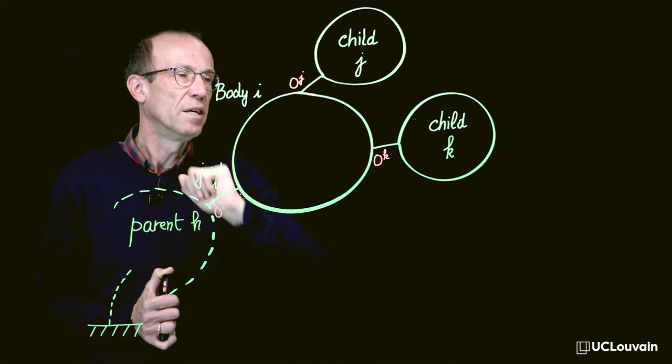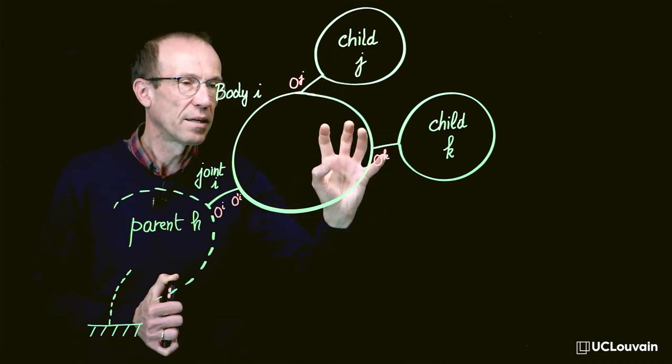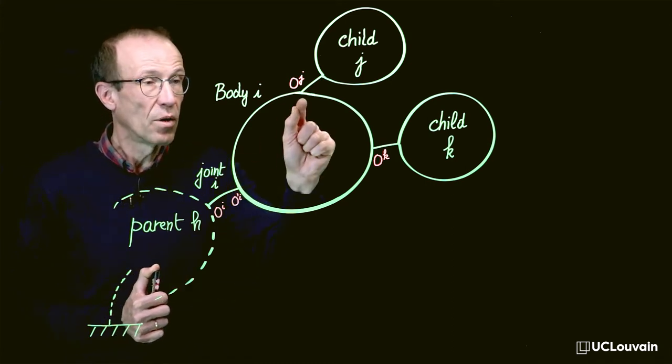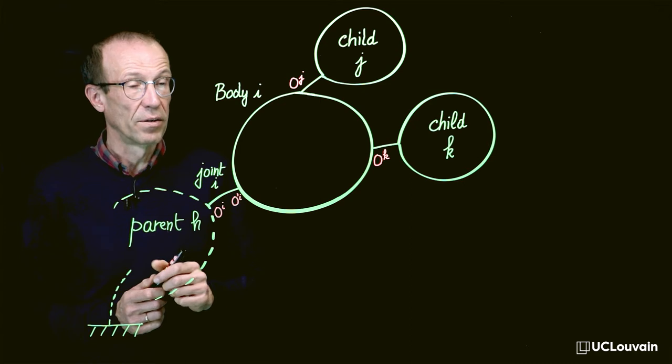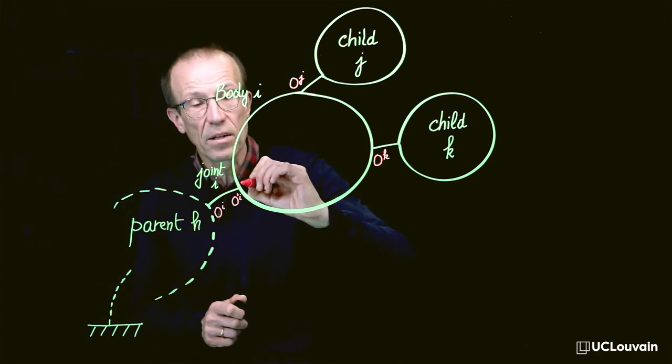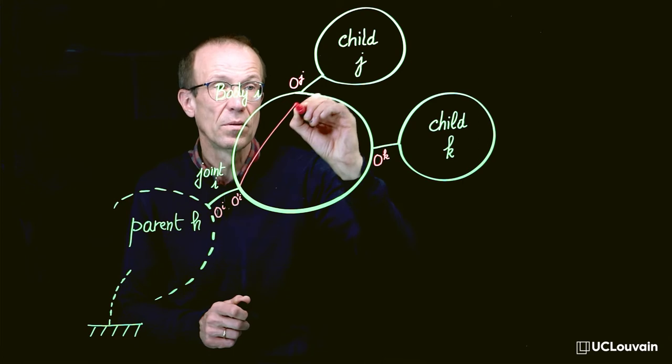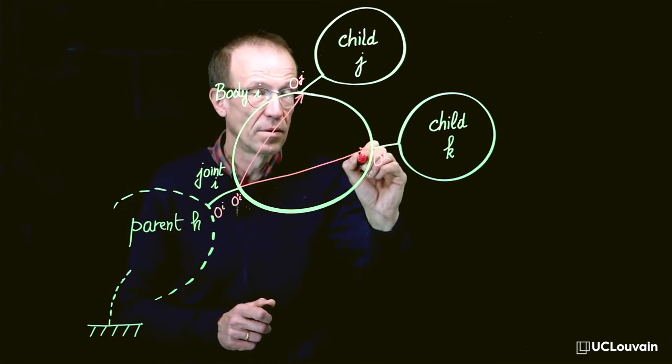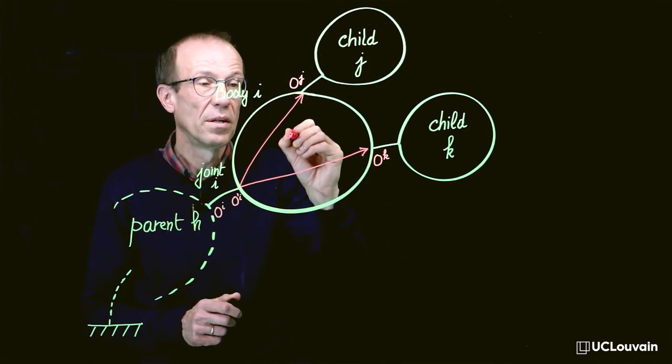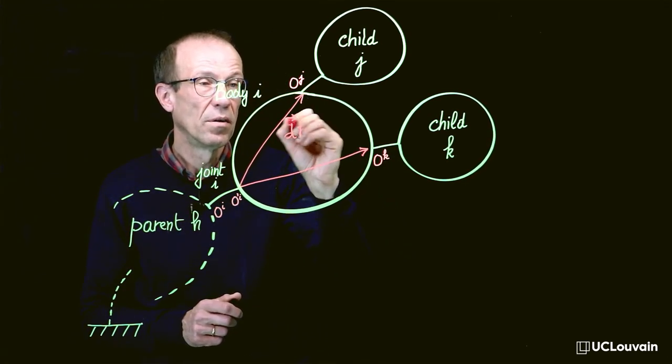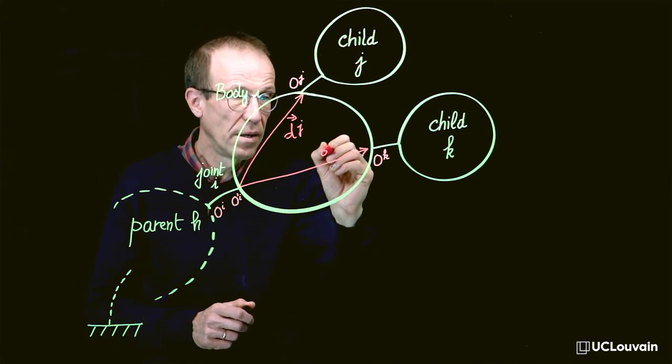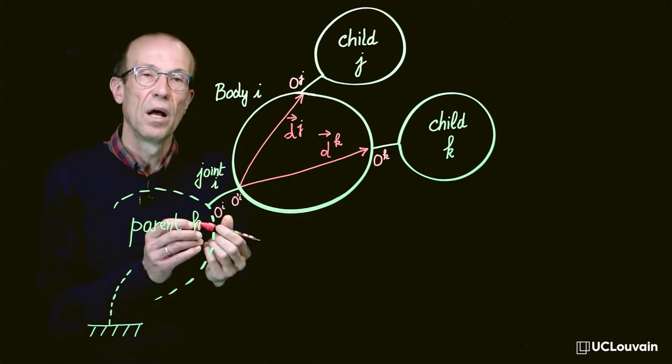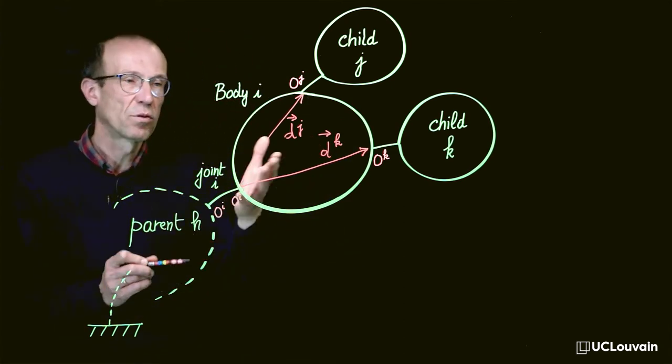These connecting points will be connected through geometrical vectors on body I, respectively denoted DJ for the first one and DK for the second one. They represent the geometrical data associated to body I.